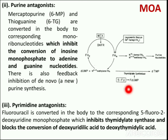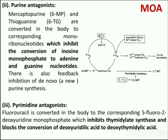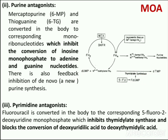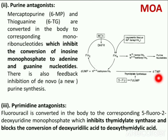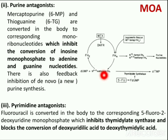The next subcategory of antimetabolites includes pyrimidine antagonists. The pyrimidine antagonist 5-fluorouracil is converted in the body to the corresponding 5-fluoro-2-deoxyuridine monophosphate. This compound inhibits thymidylate synthase and blocks the conversion of deoxyuridylic acid to deoxythymidylic acid, also known as thymidine monophosphate (dTMP), which is a nucleotide used as a monomer in DNA. Inhibition of this conversion leads to selective failure of DNA synthesis.